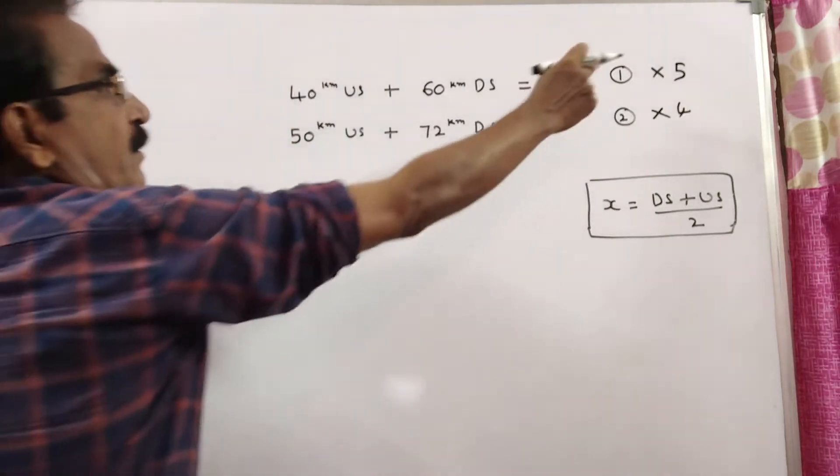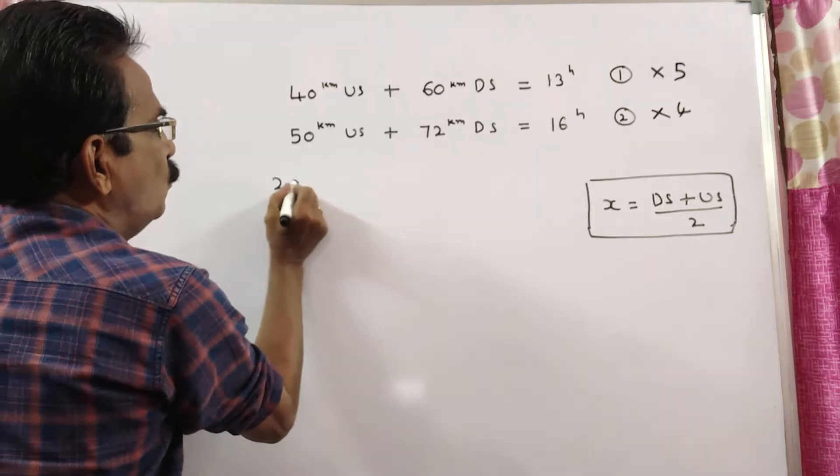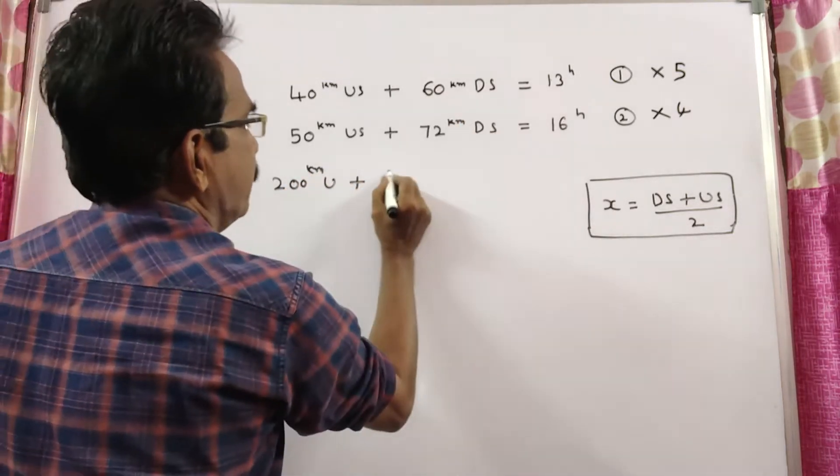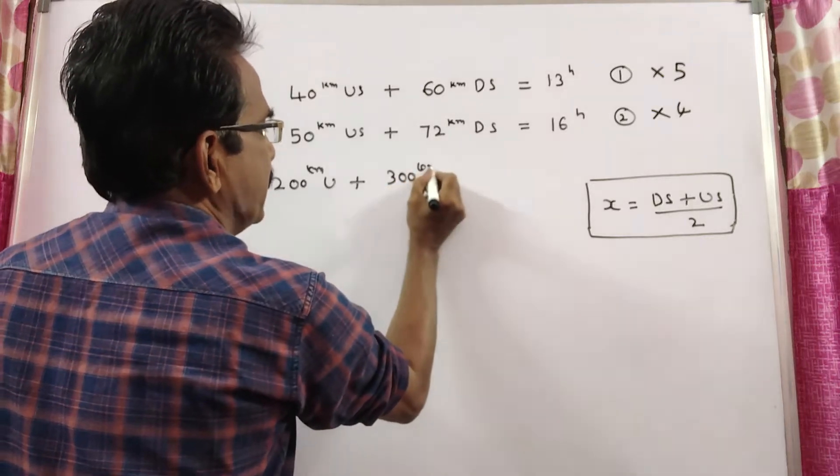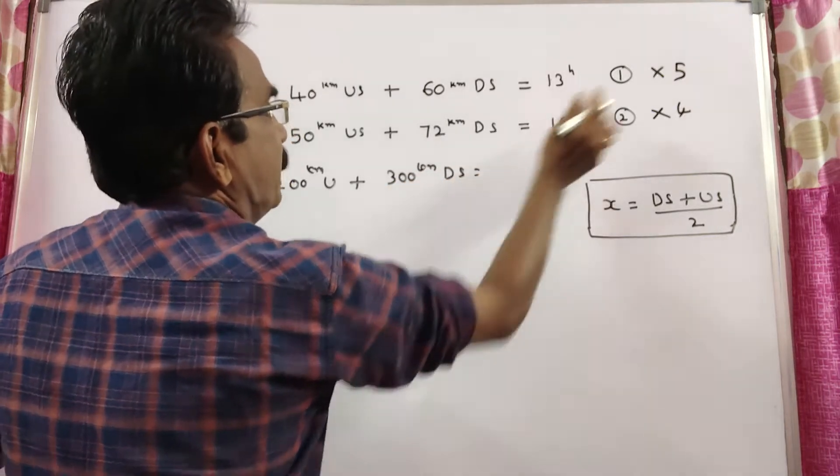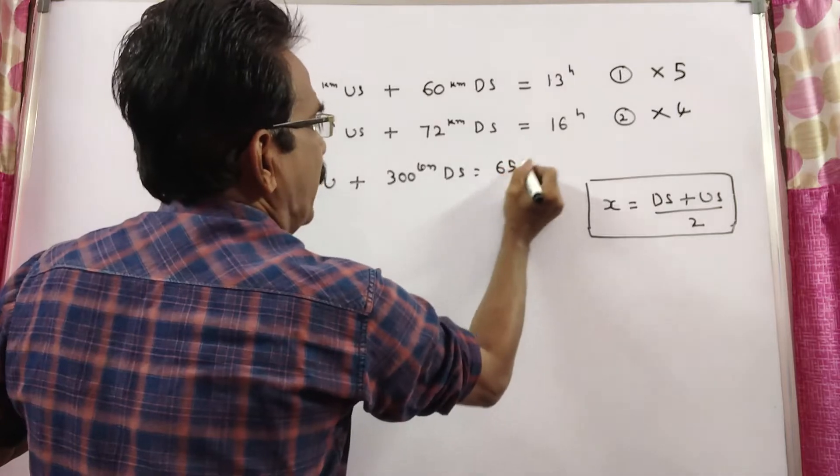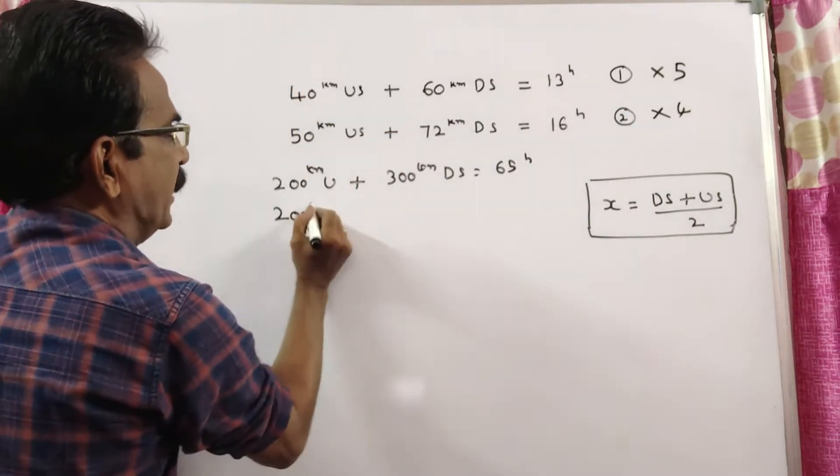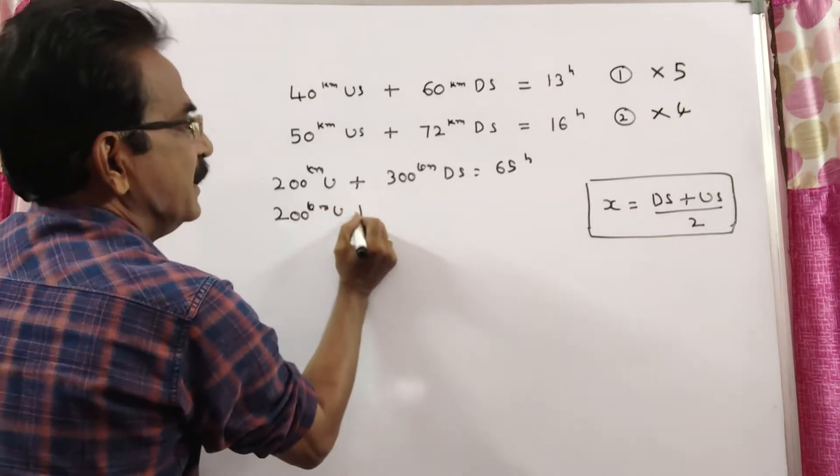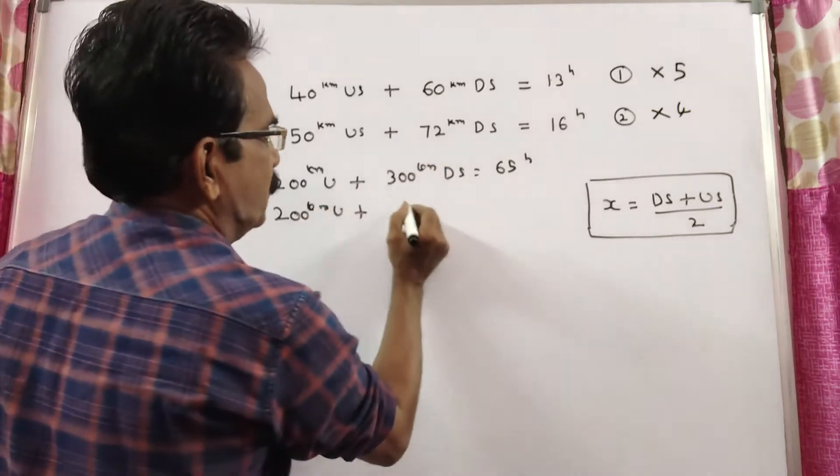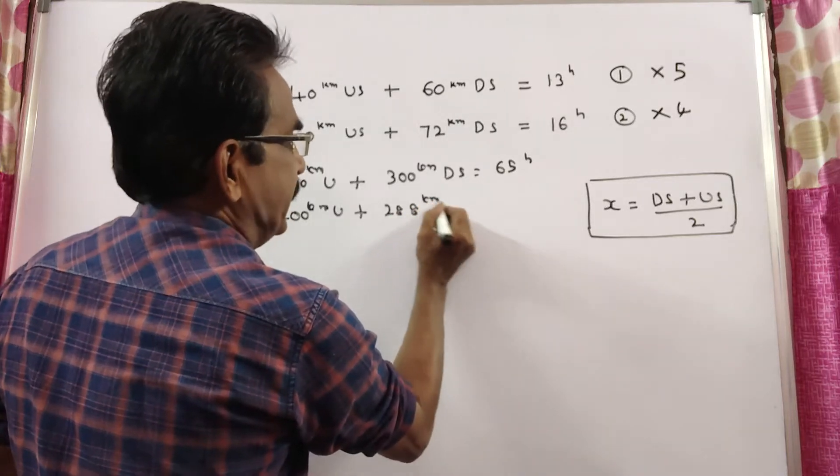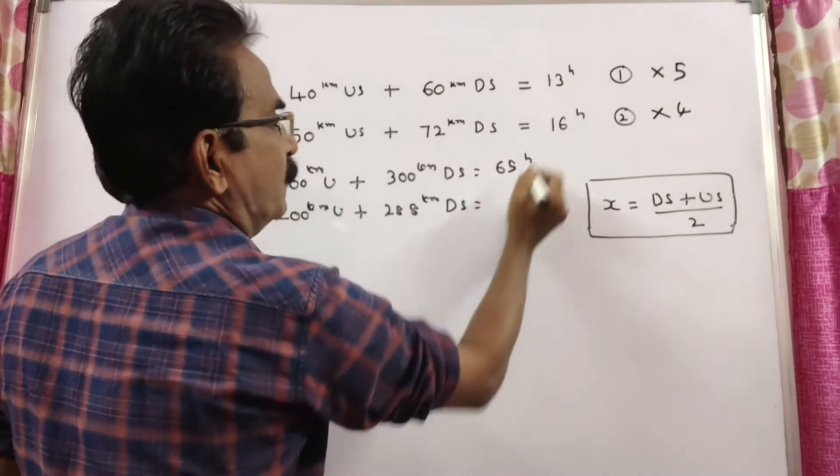40 US plus 60 DS, 200 km US plus 300 km DS. It takes 5 times 13, 65 hours. In the same way, 4 times 50, 200 km US plus 4 times 72, 288 km downstream in 4 times 16, 64 hours.